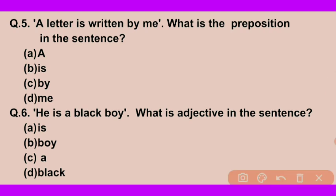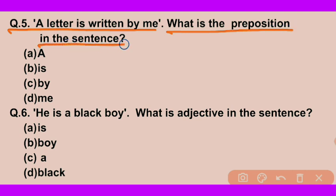Question number five: 'A letter is written by me' — इस sentence में preposition क्या है? Options हैं: A. by me, B. written, C. letter। देखें — 'a' article है, 'written' verb है, 'me' object है। जो preposition है वह है 'by'।